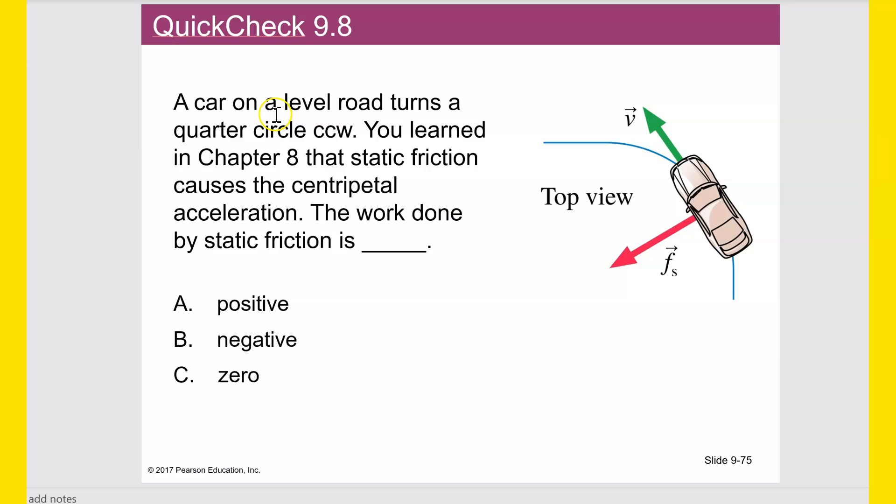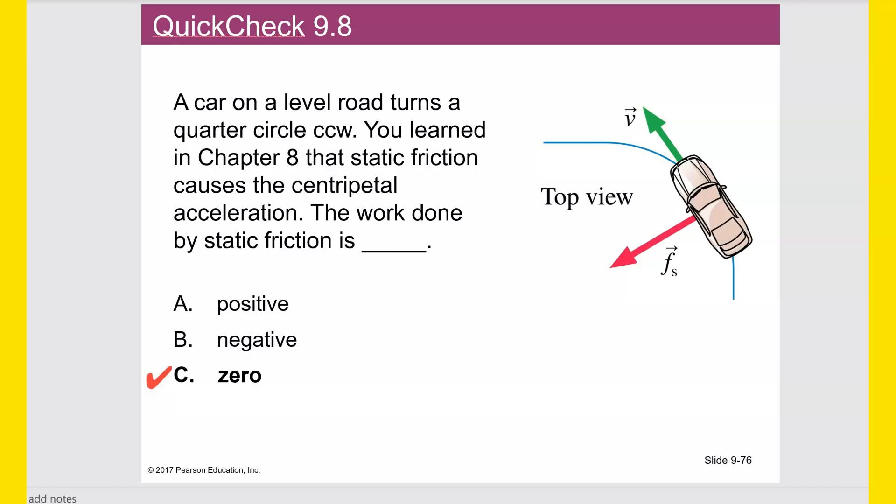So that that force is never doing work pointing it's never doing anything in the direction of the motion so that would mean that the force would be doing no work there. The particle speed and hence its kinetic energy doesn't change so the work equals the change of kinetic energy which equals zero in this case. A force everywhere perpendicular to the motion does no work. Quick check 9.8. A car on a level road turns a quarter circle counterclockwise. The work done by static friction is I bet you know this pretty easily because I just explained it in the last slide I think it would be zero. Correct.